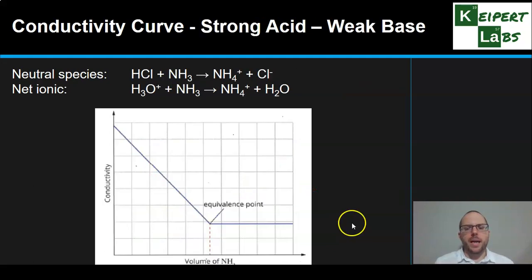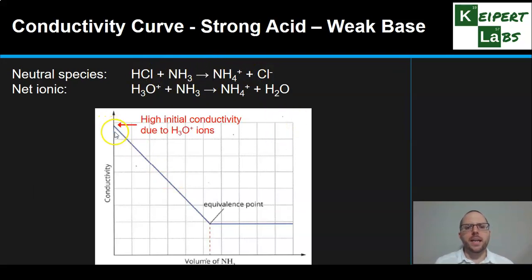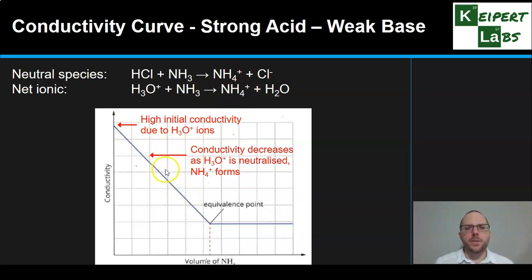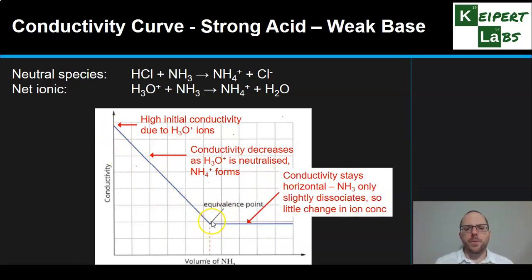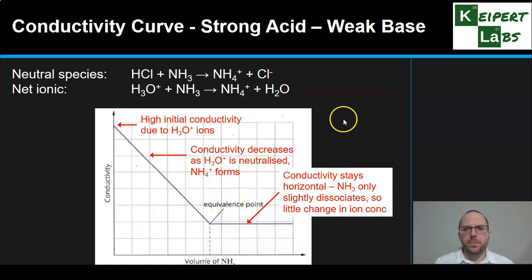For strong acid plus weak base — such as hydrochloric acid and ammonia — we start again with high initial conductivity due to the high concentration of hydronium ions. As ammonia is added, H3O+ is neutralised and we form ammonium ions, which are less conductive, so conductivity drops. We reach the equivalence point, but after that, because we're adding excess ammonia rather than a strong base, conductivity stays essentially horizontal — ammonia only dissociates to a very small extent, so adding more doesn't significantly change the ion concentration in solution.